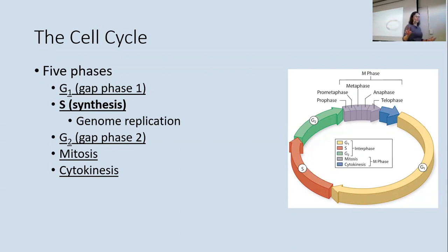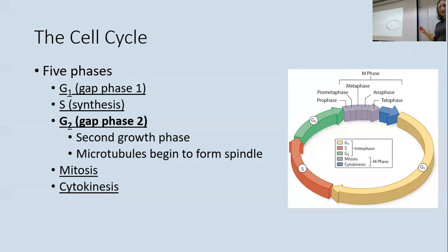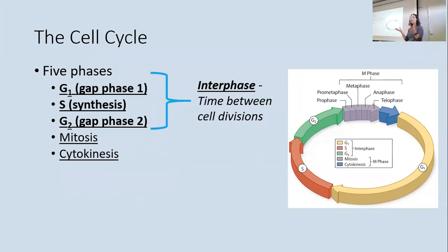After S phase we move into Gap 2, or G2. In G2 the cell grows a bit more and more actively prepares to divide. We start forming spindles and microtubules — the machinery that keeps everything organized during mitosis. The cell starts making large amounts of tubulin to build microtubules that will grab all the chromosomes. G1, S, and G2 together are called interphase.